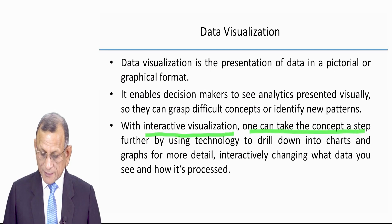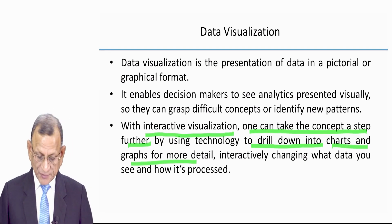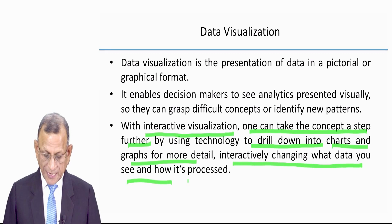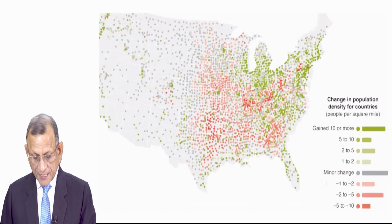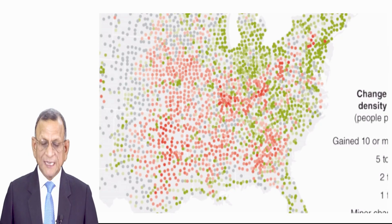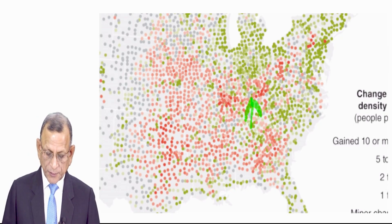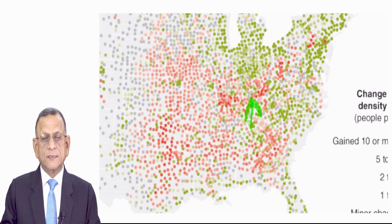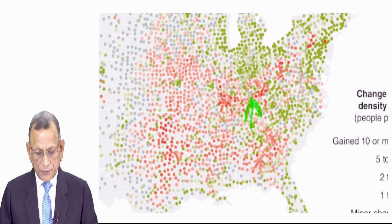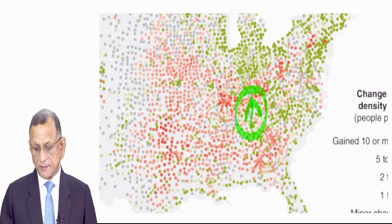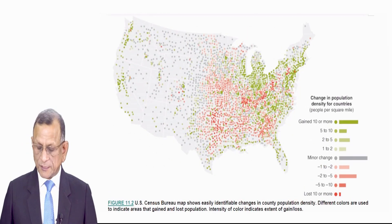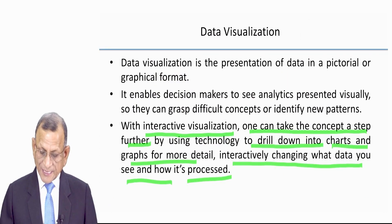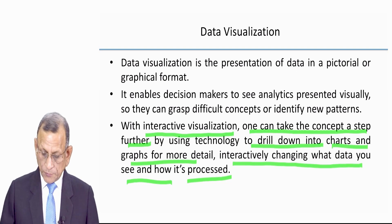One can take the concept a step further by using technology to drill down into charts and graphs for more details, interactively changing what data you see and how it is processed. In this map, if I enlarge it and click at a specific point, I will be able to see a larger map of that limited area — something you have experienced with Google Maps as well, where you can increase or reduce the size of the map. This is interactively changing the data you want to see.